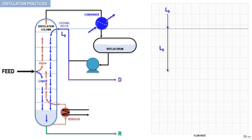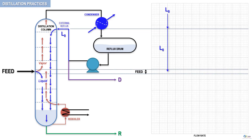Once the falling liquid reaches the feed stage, the liquid flow rate will increase by an amount equal to the liquid flow rate introduced to the column. We'll call this amount L_feed. Basically, at the feed stage level, the liquid flow inside the distilling column increases from L0 to L0 plus L_feed. From the feed stage, the liquids continue to flow downward at almost a constant flow rate to the bottom of the column. We assume that the scrubbing process has little impact on the overall liquid flow.